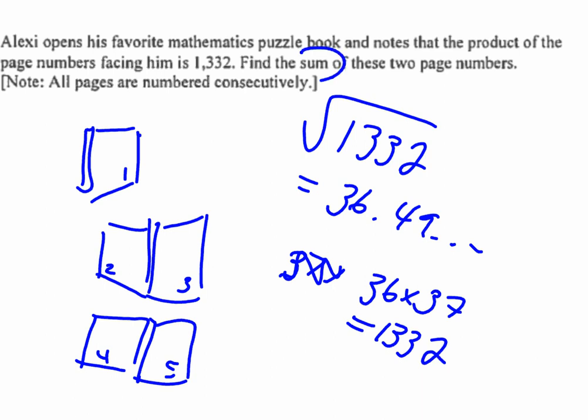And you're going to find that 36 times 37 will give you 1,332, and so you found the two pages. Then it said to find the sum, so then you just have to do 36 plus 37 and you'll get 73, and that's the answer to that question. The key there was to realize that the first page is going to be labeled 1 and then 2, 3, 4, 5, etc.